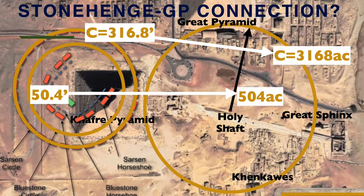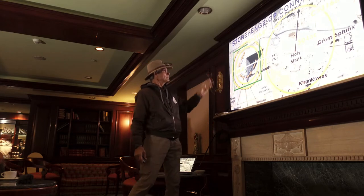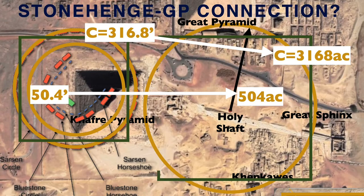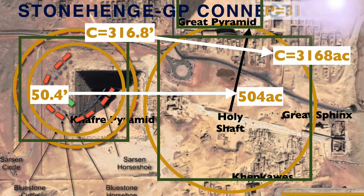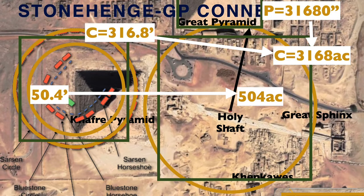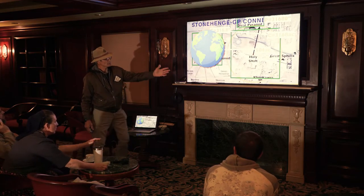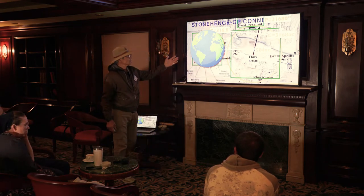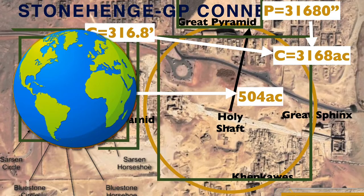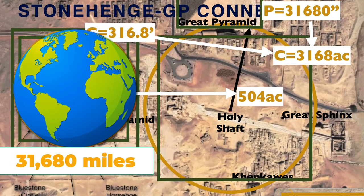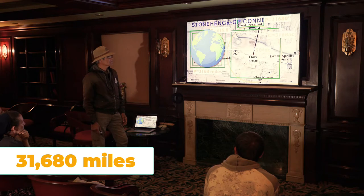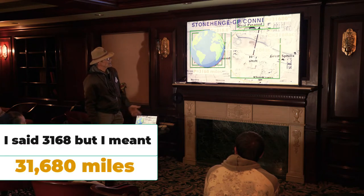If you take the square that would have the same perimeter as that circle has a circumference, and do the same thing with the Great Pyramid, it's 31,680 inches. You notice the connection in numbers: 3,168 and 3,168. Now let's put the Earth on there — the Great Pyramid, the circle I discovered, Stonehenge. Make a square around the Earth: it's 3,168 miles. There's the connection in numbers again.